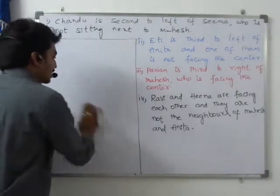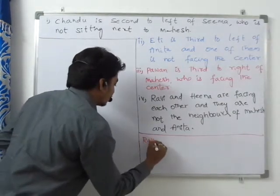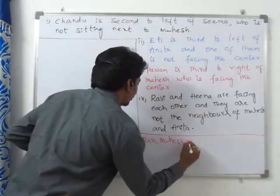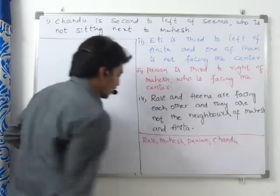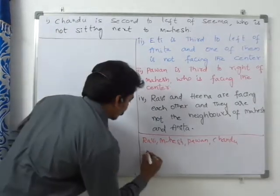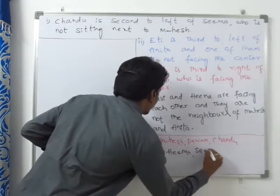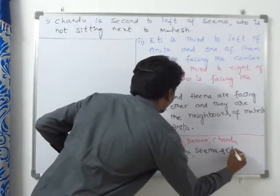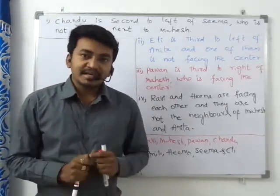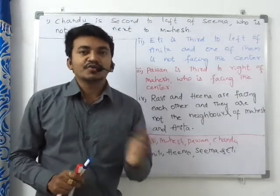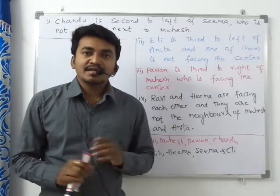The question is: four males — Ravi, Mahesh, Pavan and Chandu — and four females — Anita, Hina, Seema and Iti — are sitting around a circle in such a way that two males and two females are not facing the center, and no three females are sitting together.